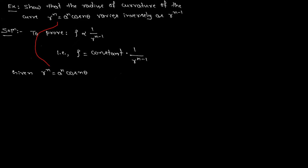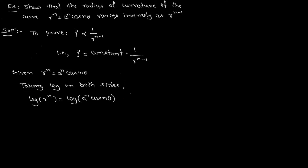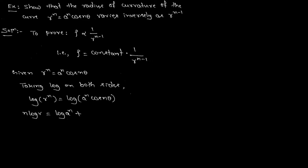Let us take the given curve and take log on both sides. Applying the property of logarithm, the left side becomes n log r. The right side is of the form log(m·n), which becomes log m plus log n. Applying the logarithmic property further, n comes out as a multiplier.